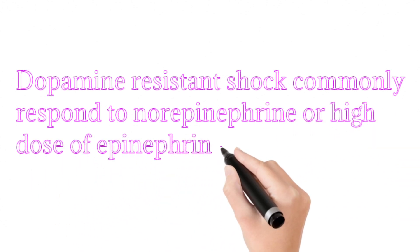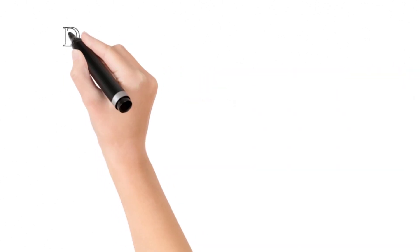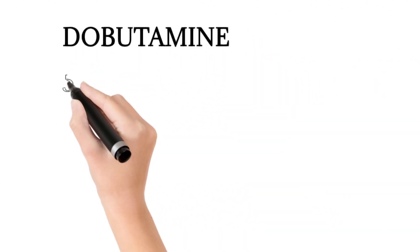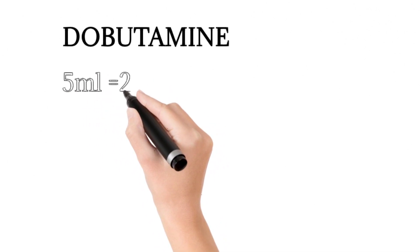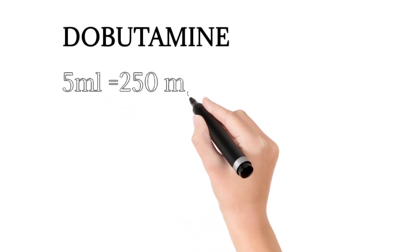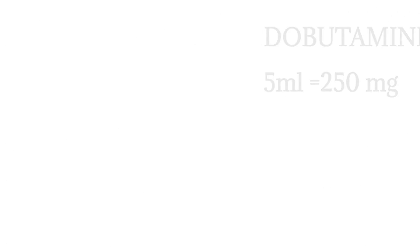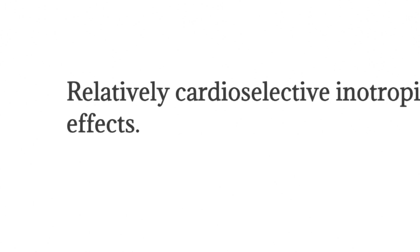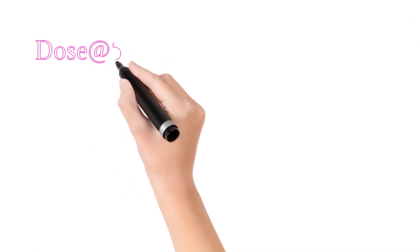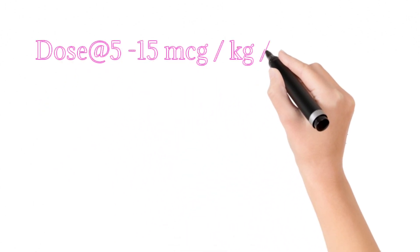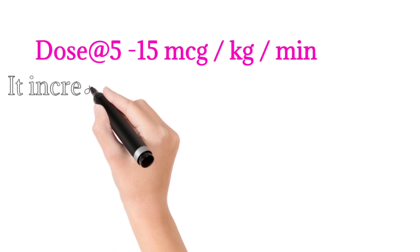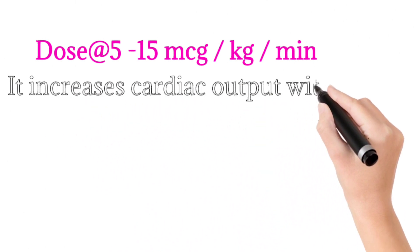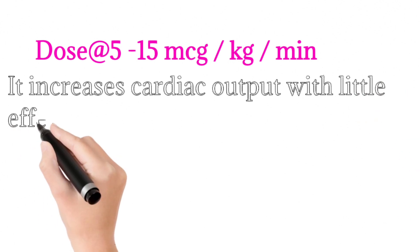Now we have dobutamine. It is also available in 5ml ampoules containing 250 milligrams with relatively cardio selective inotropic effects. The dose is 5 to 15 micrograms per kilogram per minute. It increases cardiac output with little effect on heart rate.